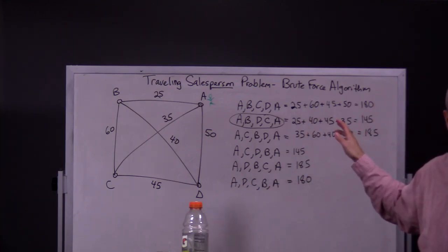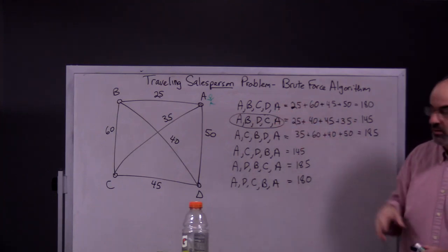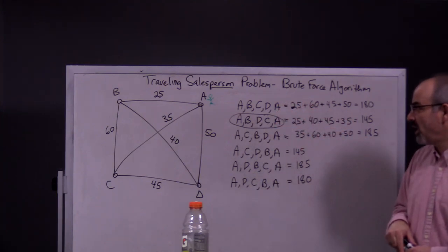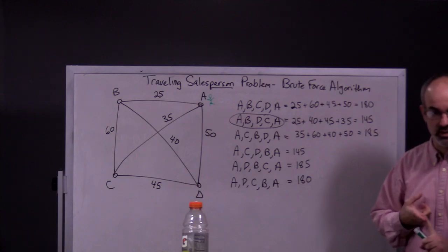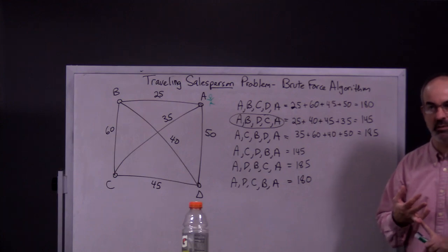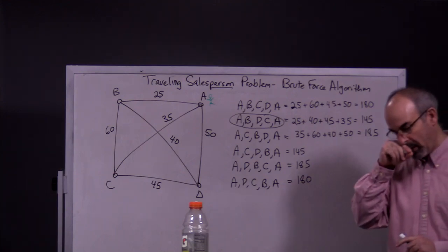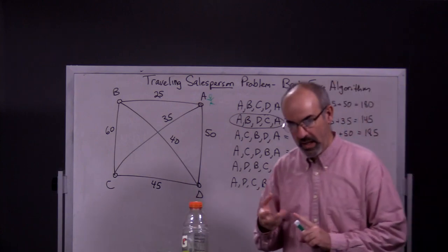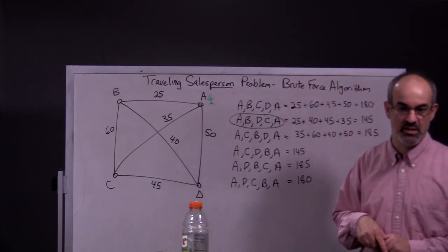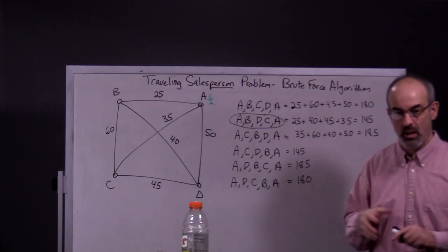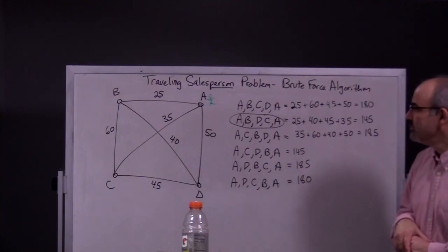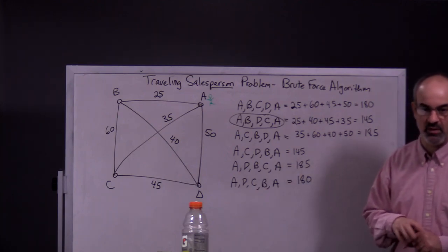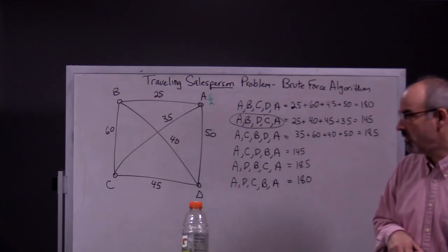All right, so, that's the brute force algorithm, traveling salesperson problem using the brute force algorithm. Next, we're going to talk about nearest neighbor algorithm and the cheapest link algorithm, and possibly the repetitive nearest neighbor algorithm. That one is basically just like the nearest neighbor algorithm, so I might not really cover that in great detail, but please read about it. And if there's videos on Pearson, please do look at those also.